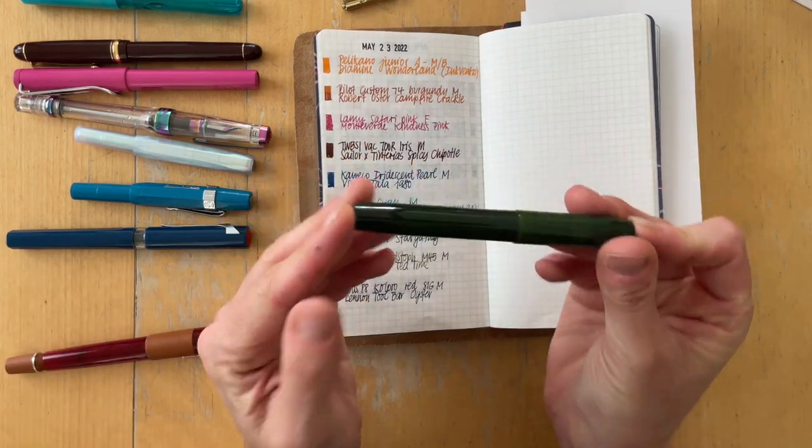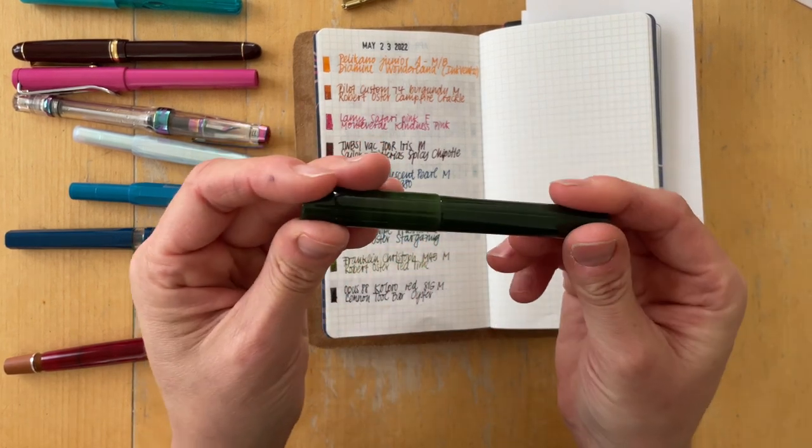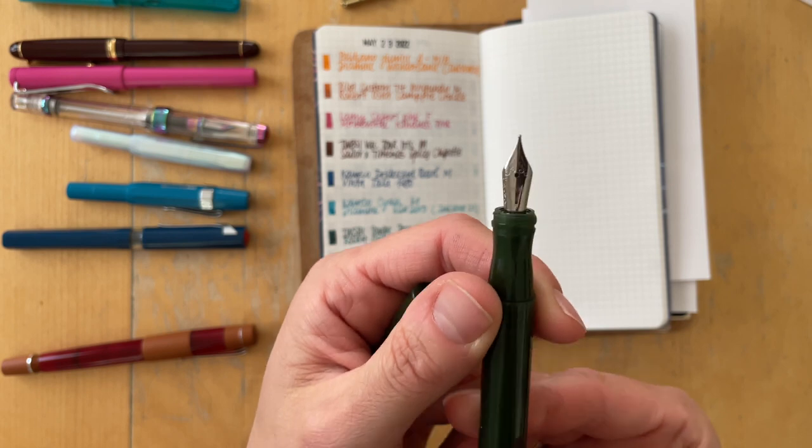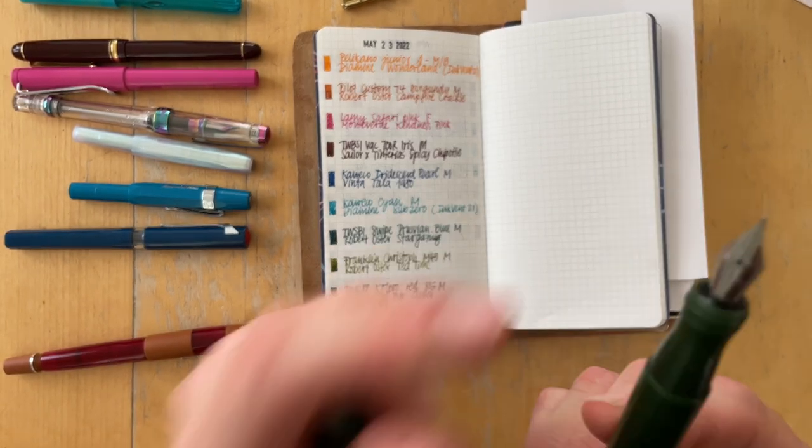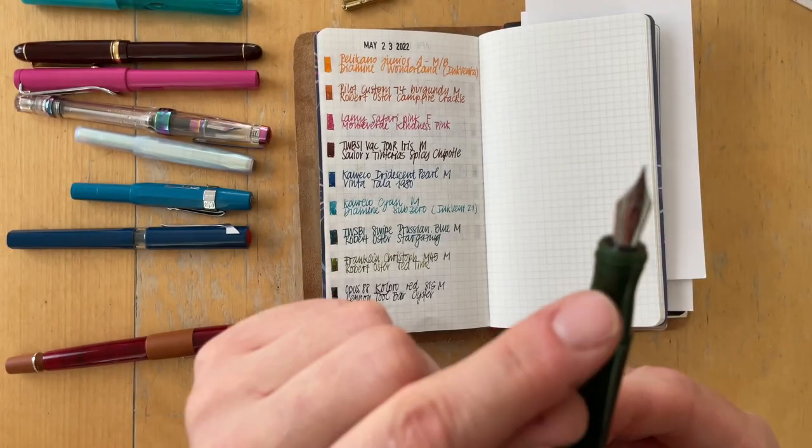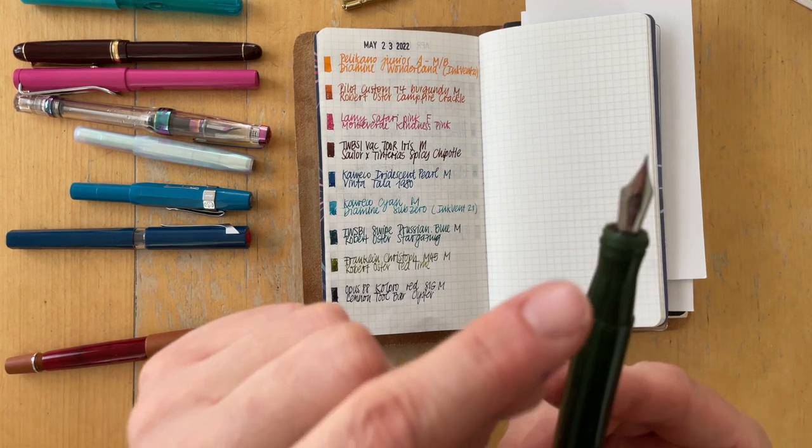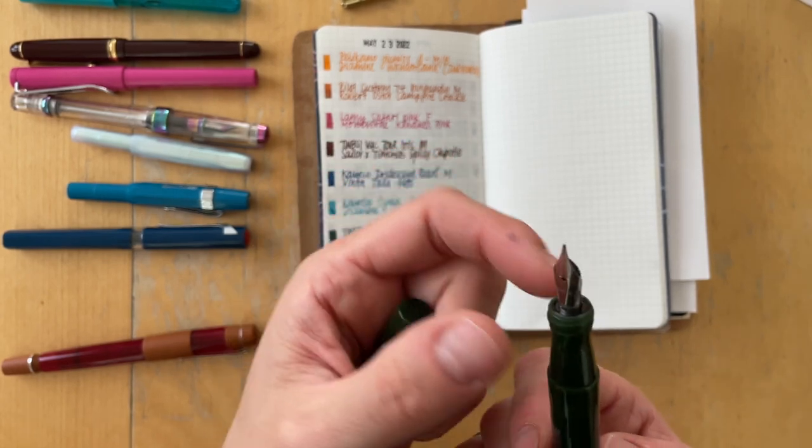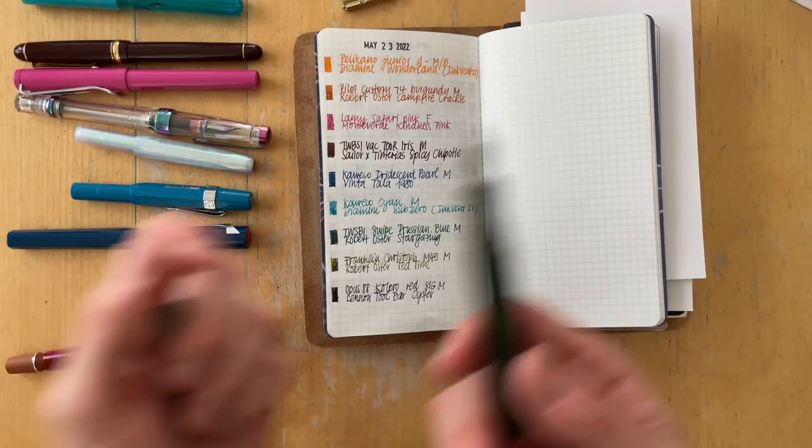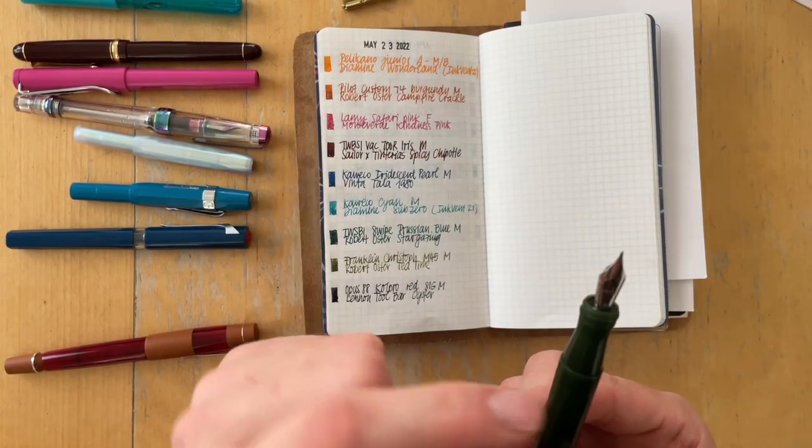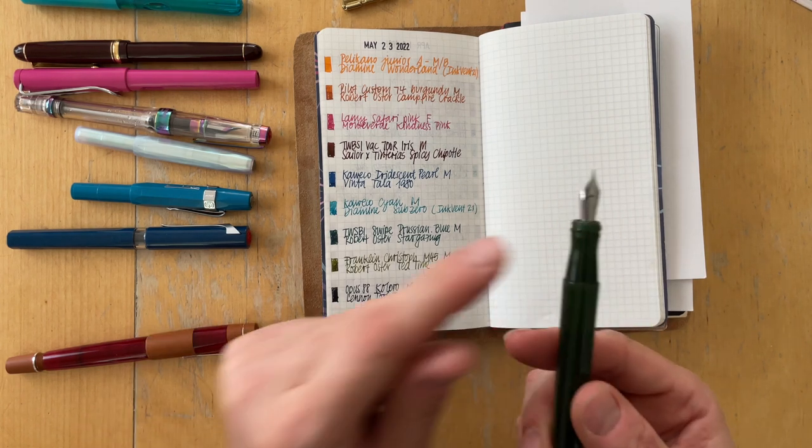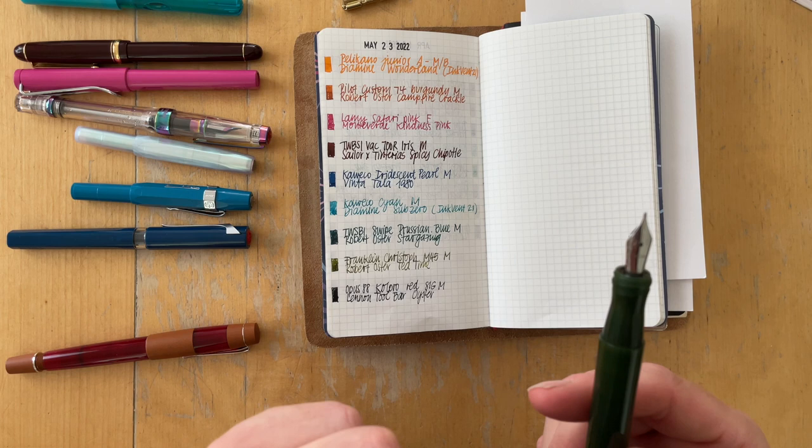Then I had this one inked, the Franklin Christoph model 45. It has an Opus 88 M nib. They are Franklin Christoph and Opus 88, both use Jowo nibs. You can unscrew the complete housing nib unit and then just move it around. And I really enjoy this nib with the pen.